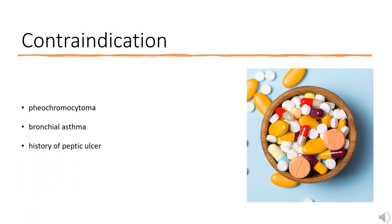Beta-histine is contraindicated for patients with pheochromocytoma. Patients with bronchial asthma or a history of peptic ulcer need to be closely monitored.